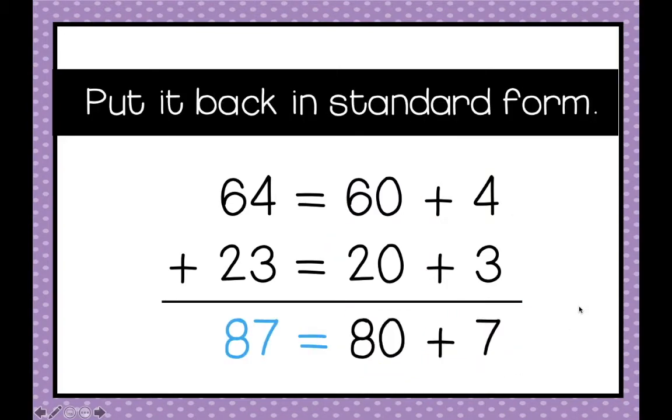Now we're going to put it back into standard form. So expanded form, 80 plus 7 is 87 in standard form.